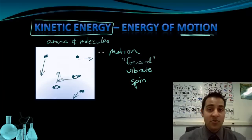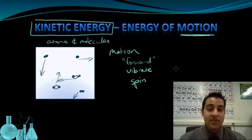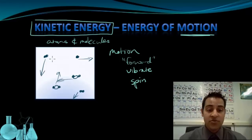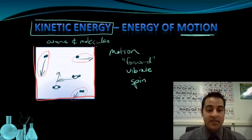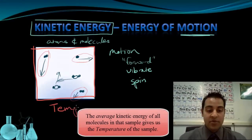Atoms and molecules are always moving, and they move quite a bit. The molecules in the air around you on a regular day are moving faster than a bullet shot from a rifle. Now, when I drew some of these motions in for these molecules, I gave some of them a lot of motion, and some of them only a little motion. Each of these molecules has a different amount of kinetic energy. But the sample as a whole — if I consider all the molecules — their average kinetic energy gives me the temperature.